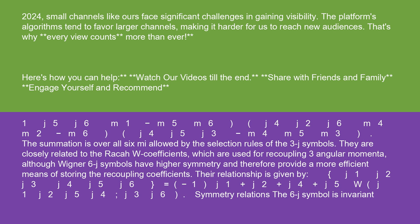The summation is over all six M allowed by the selection rules of the 3J symbols. They are closely related to the Racah W coefficients, which are used for recoupling three angular momenta, although Wigner 6J symbols have higher symmetry and therefore provide a more efficient means of storing the recoupling coefficients.